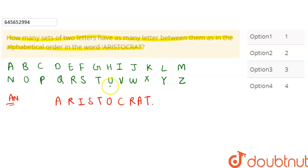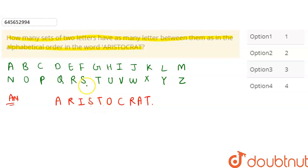This question means that if you take a pair of letters — for example, here we have A and S, the second and third letter, similarly here — we need to find pairs where the number of letters between them in the word matches the number of letters between them in the alphabet.